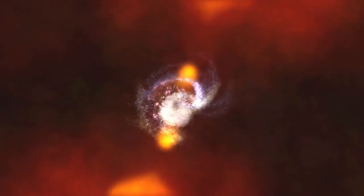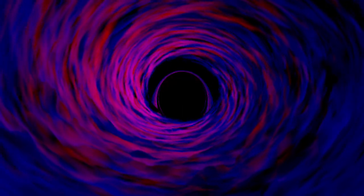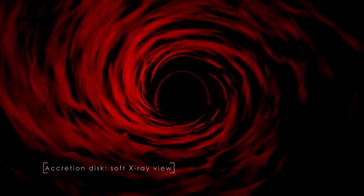The closer you get to a black hole, the higher the temperatures: 10 million or more degrees. As a result, if you want to study the inner parts of the accretion disk, you have to look at high-energy gamma and X-rays.